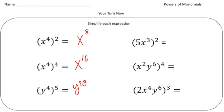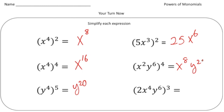These next three problems are power of a product, since we're multiplying 5 times x cubed and raising it to the second power. Every part inside the parentheses gets squared: 5 squared is 25, and x cubed squared — multiply the powers — is x to the 6th, giving 25x to the 6th. Next we get x to the 8th times y to the 24th. Last, 2 cubed is 8, so the answer is 8x to the 12th y to the 18th. How'd you do?